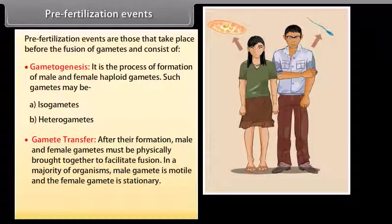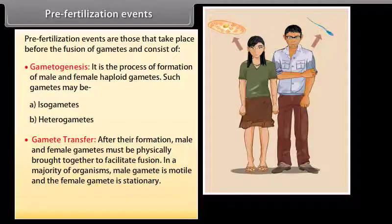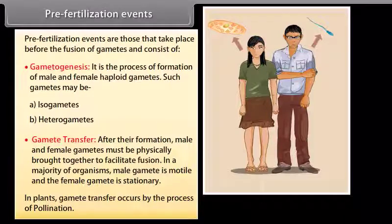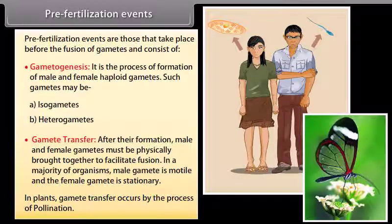Gamete transfer: after their formation, male and female gametes must be physically brought together to facilitate fusion. In a majority of organisms, the male gamete is motile and the female gamete is stationary. In plants, gamete transfer occurs by the process of pollination.